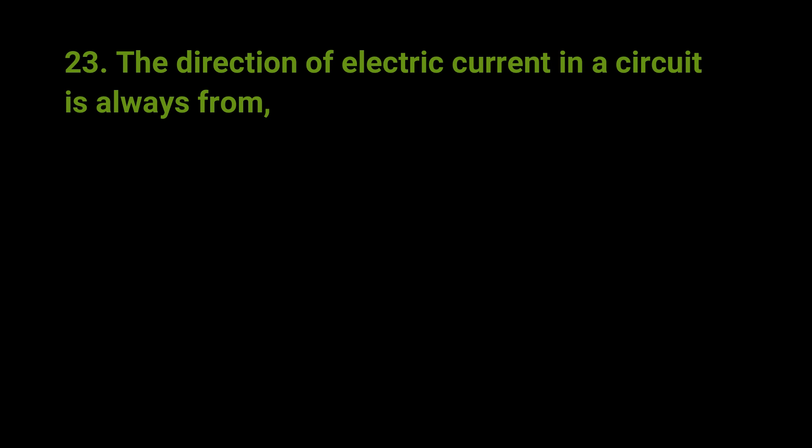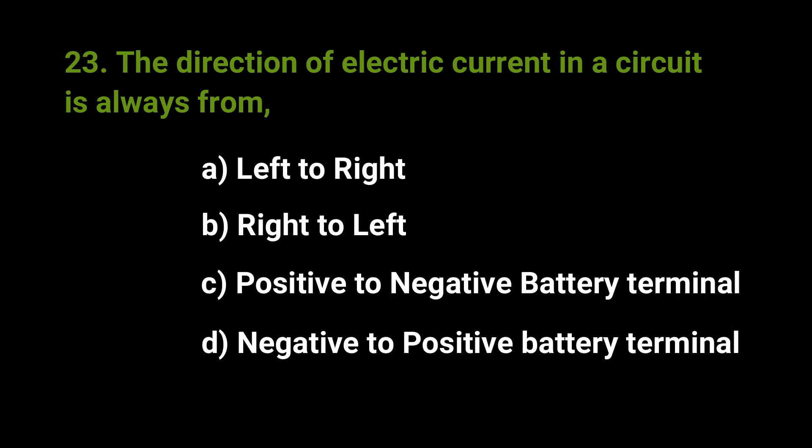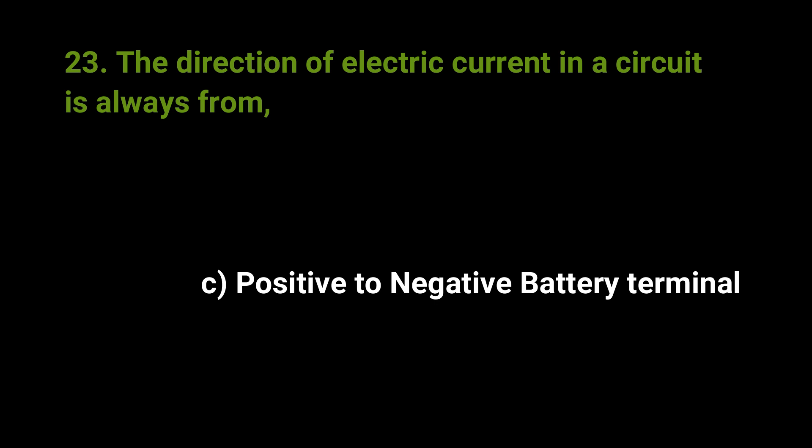The direction of electric current in a circuit is always from. The answer is C. Positive to negative battery terminal.